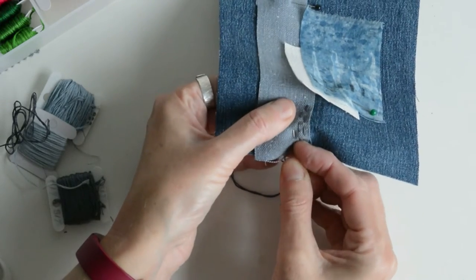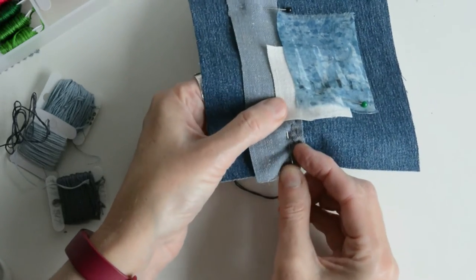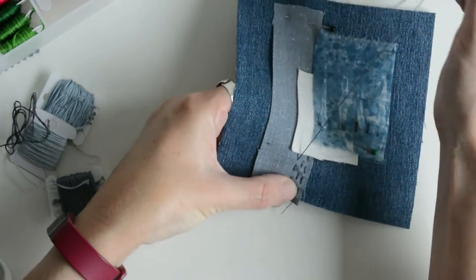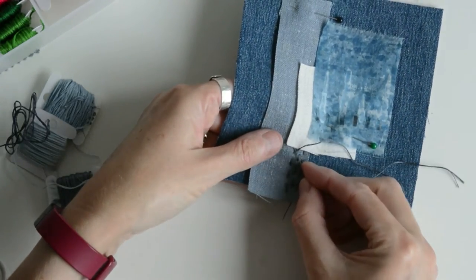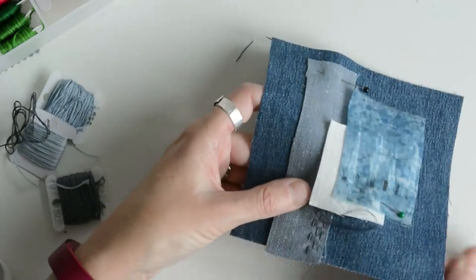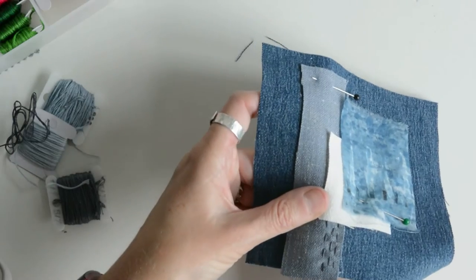Usually my stitches are about two to three millimeters. That's about one eighth of an inch I think, or shorter. My inch knowledge doesn't go that far. But you're basically holding your fabric in place with running stitch.